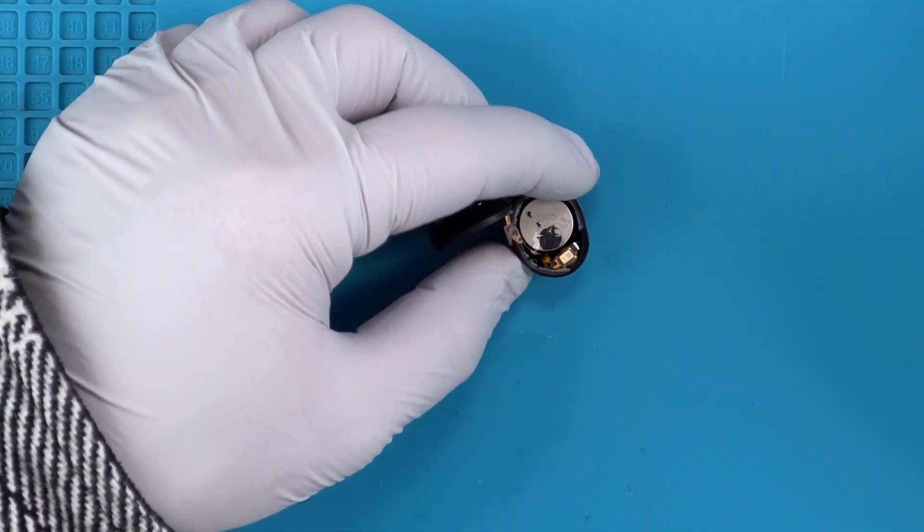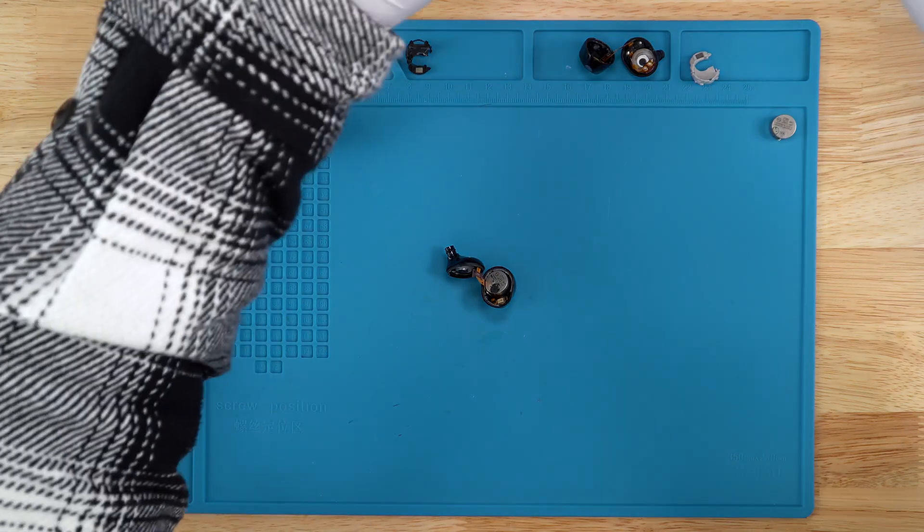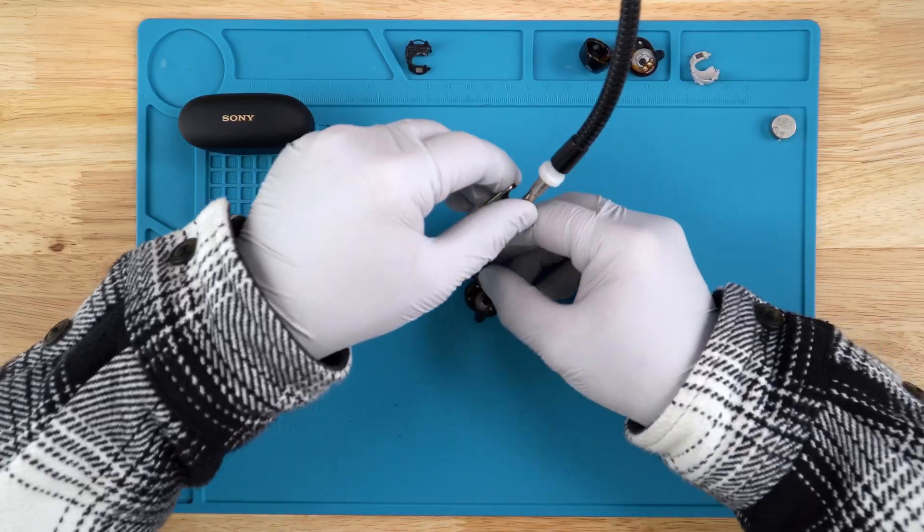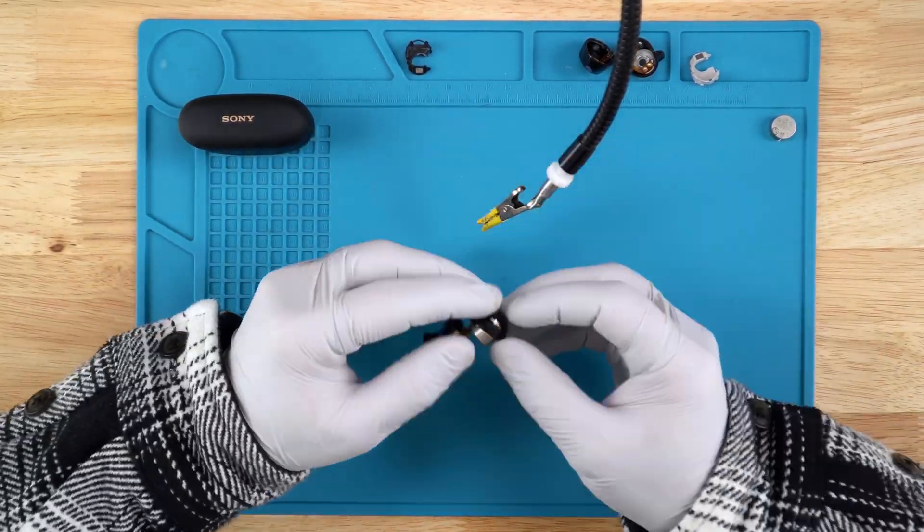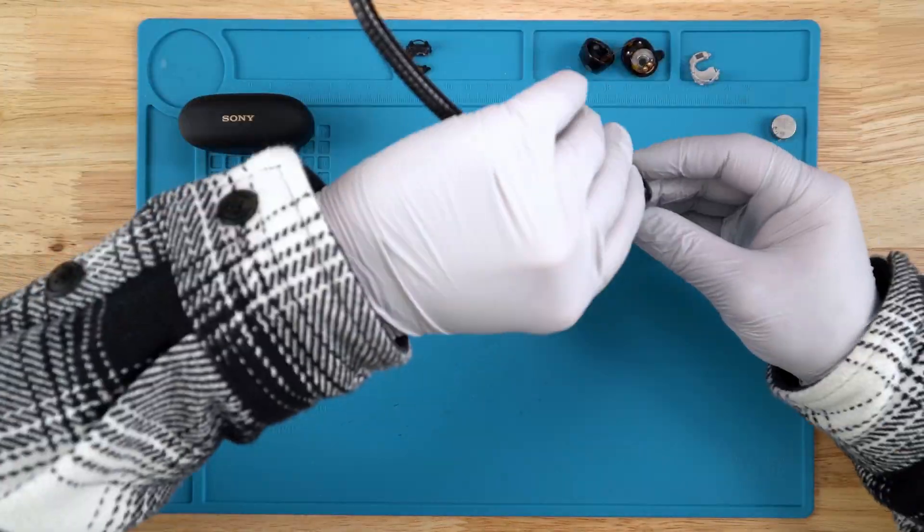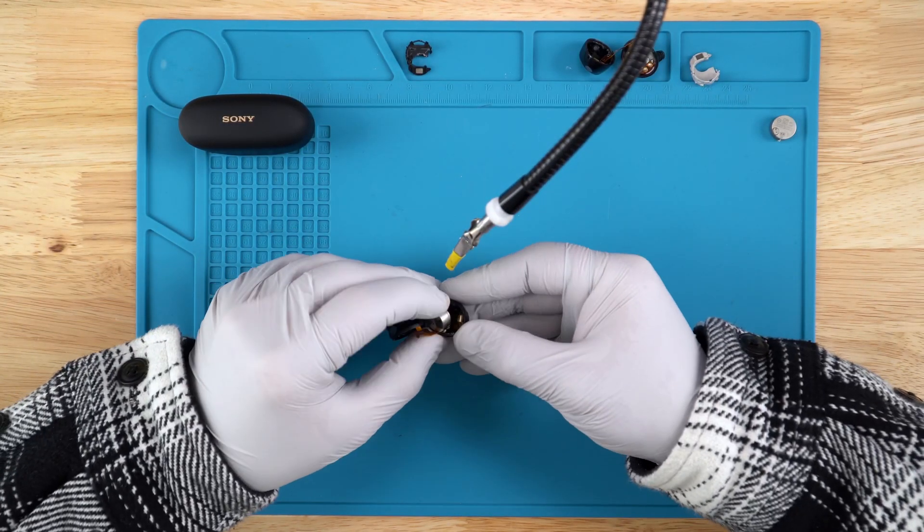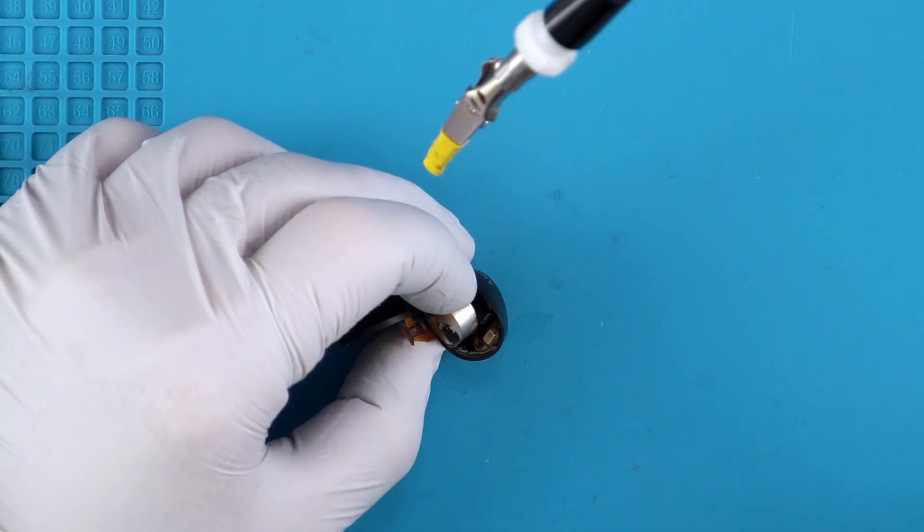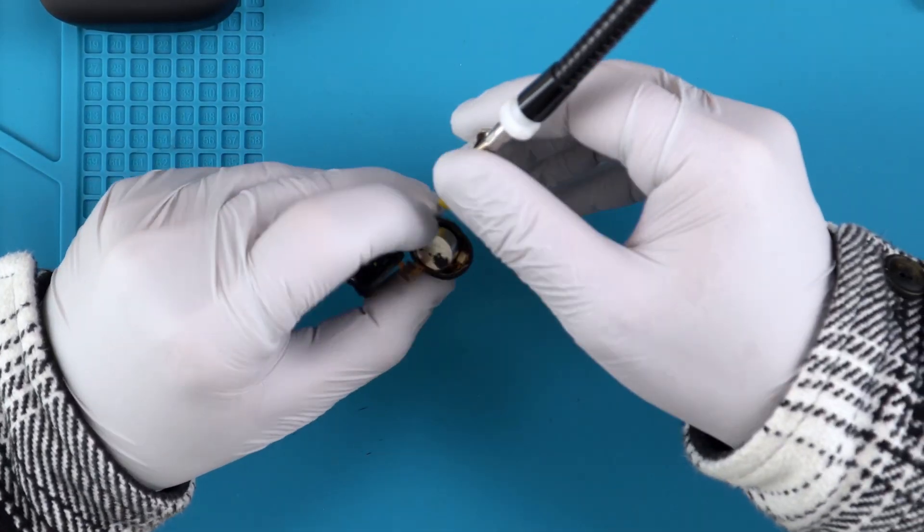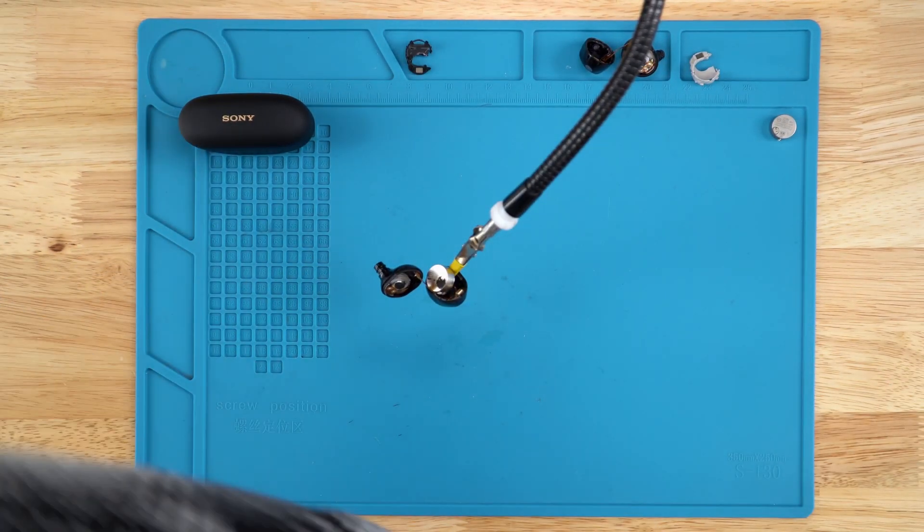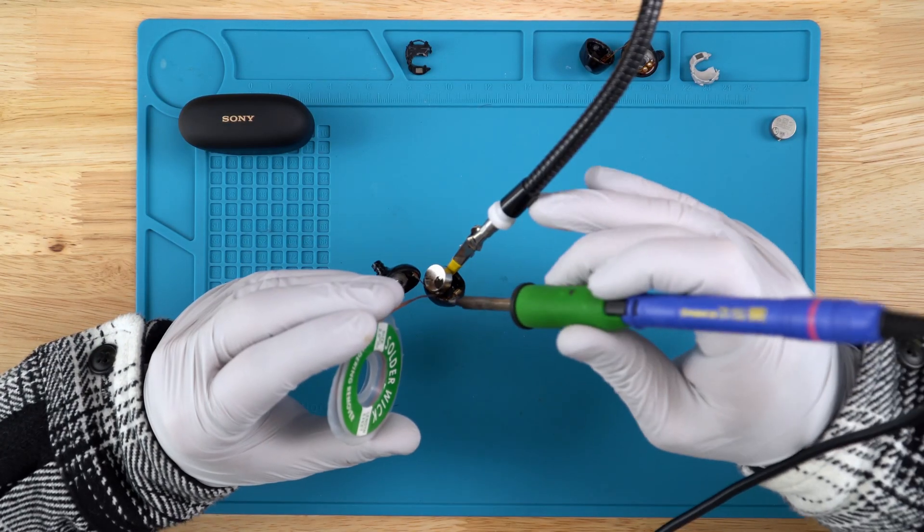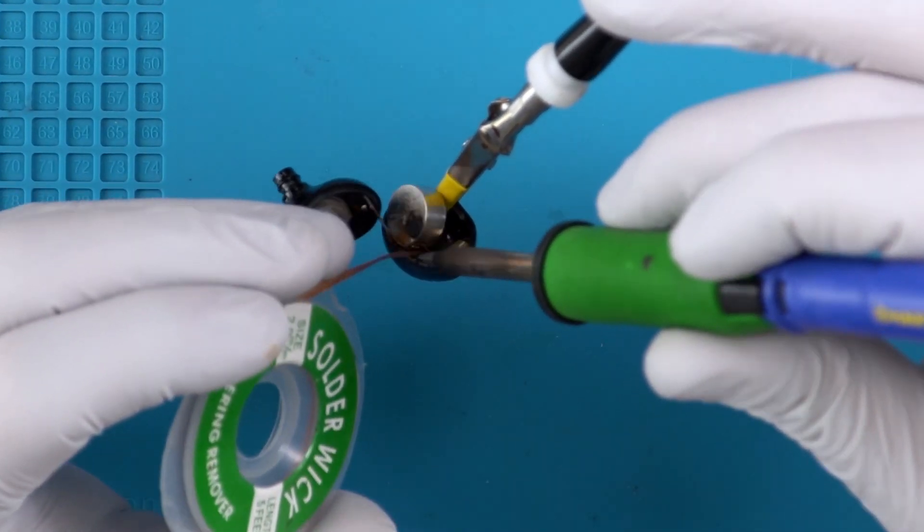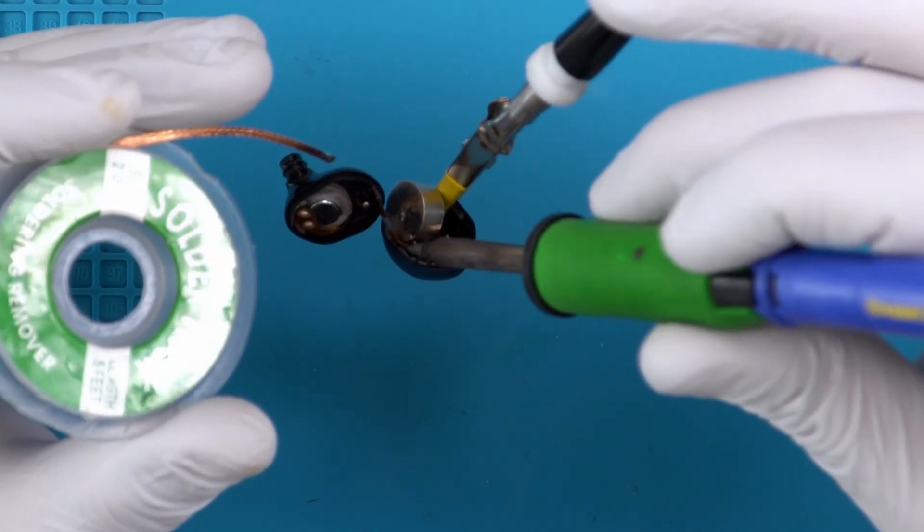We'll do the same with this one here. We're gonna go ahead and pull out all that solder. Again, if you do want to make it easier for yourself you could heat up that backboard and pull it up. There's our second battery.